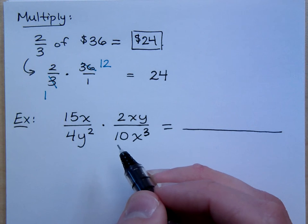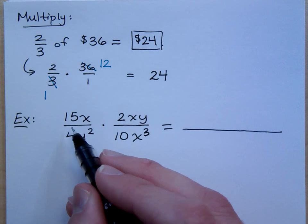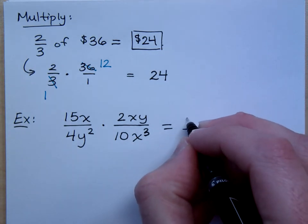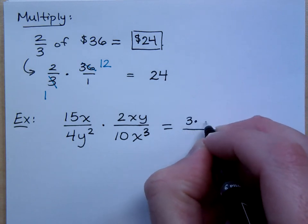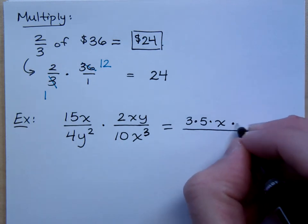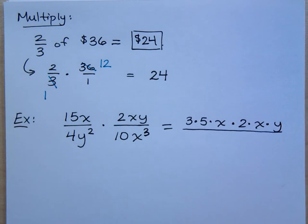Here's something you can do to help you out here. Rewrite everything using all the factors. How can you rewrite 15X? How can you break this down? That's 3 times 5 times X. And then over here, you just have 2 times X times Y. You can't really do anything else with that.